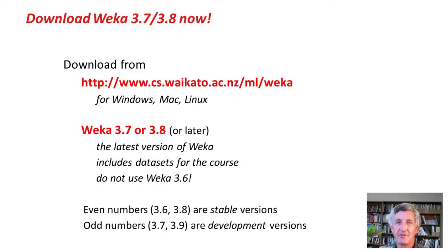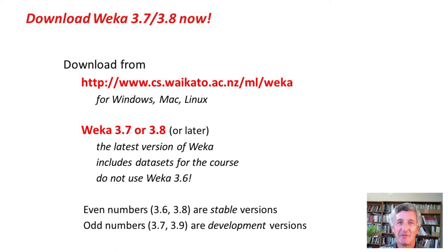What you should do now is download WEKA 3.7 or 3.8. The way WEKA works is that odd-numbered distributions like 3.7 are development distributions, and then they're released as stable even-numbered versions. So WEKA 3.7 will be released as WEKA 3.8, either before you see this or soon afterwards. In any case, download the latest version of 3.7 or 3.8 if it exists — that'll be fine for this course.